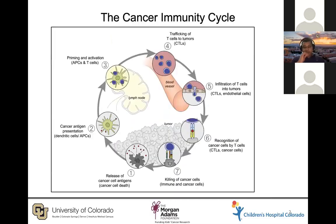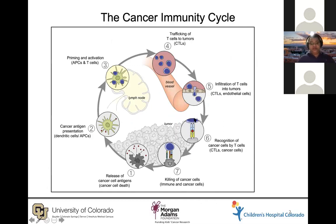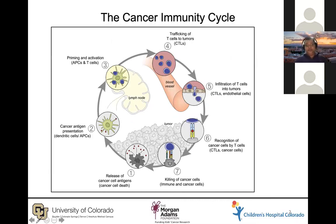Immunotherapy in general is based around the cancer immunity cycle, which starts at stage one with the release of cancer cell antigens by tumor cells. These are taken up by APCs, trafficked into the lymph nodes, and presented to T-cells, which then become tumor-specific T-cells that can in theory attack and kill tumor cells.